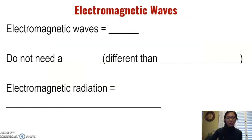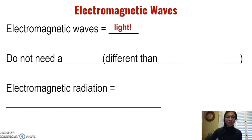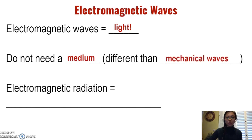The first thing you need to know about electromagnetic waves is that they are a way to describe light. Light is a form of electromagnetic waves, and EM waves travel at the speed of light, which is what ties them together. Electromagnetic waves are still waves, which means they transmit energy. However, they do not need a medium to do so. This is different from mechanical waves, which do need a medium to transmit energy.